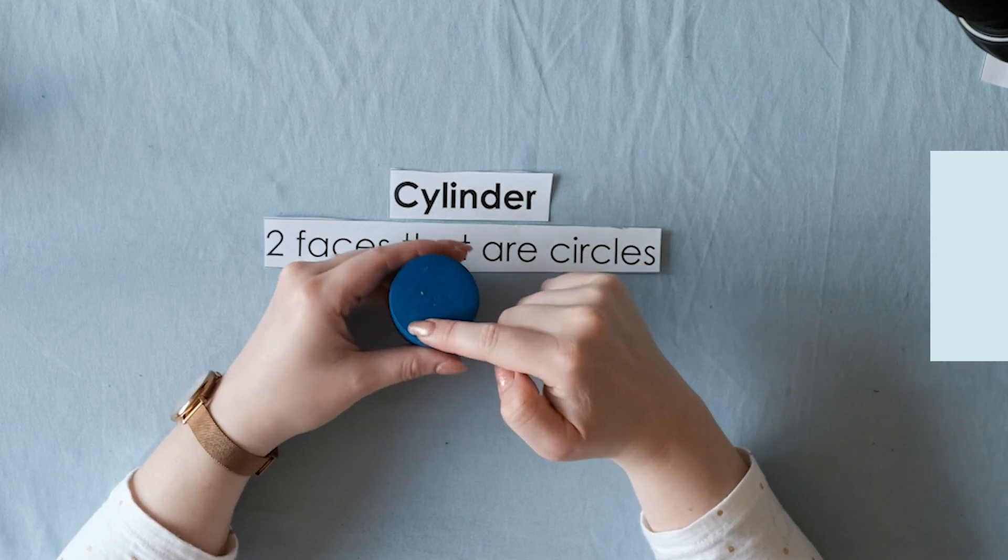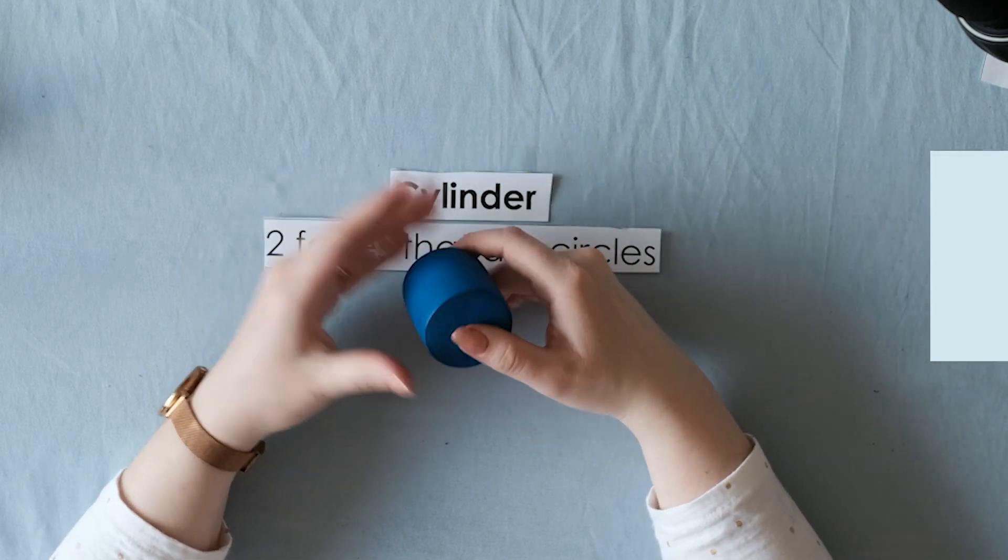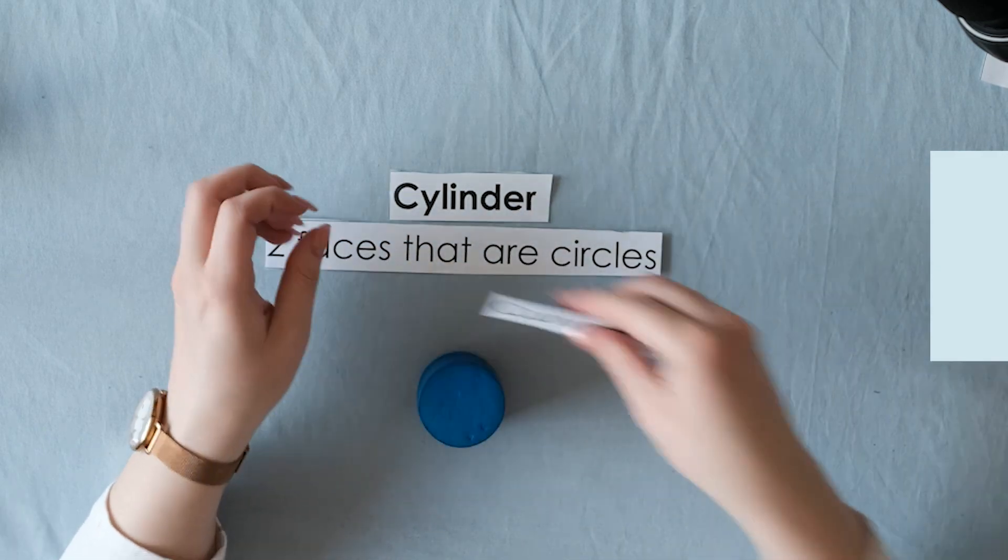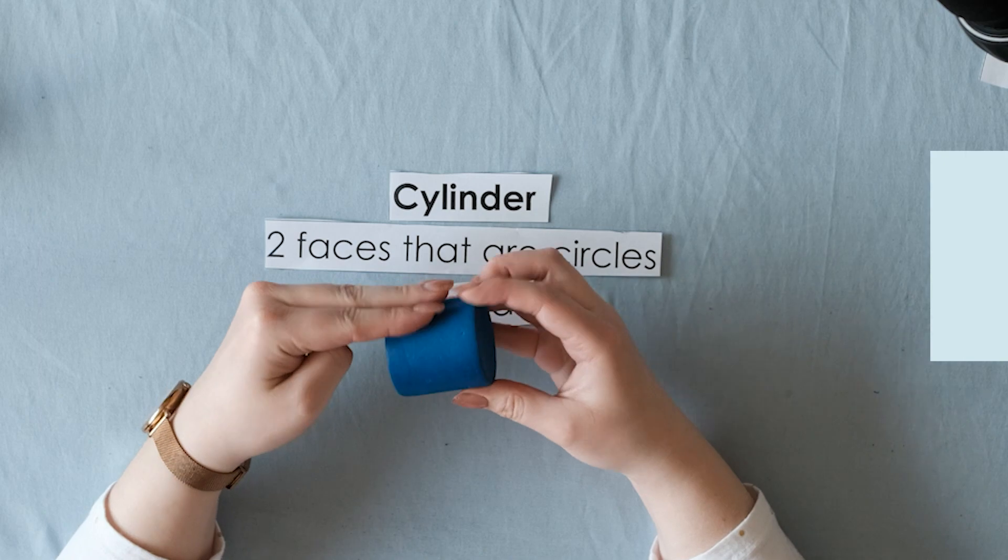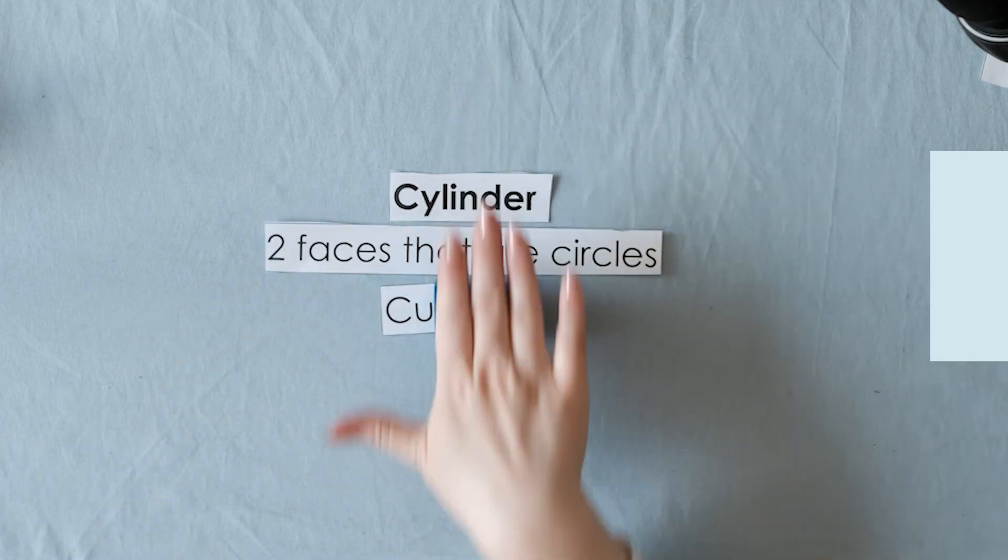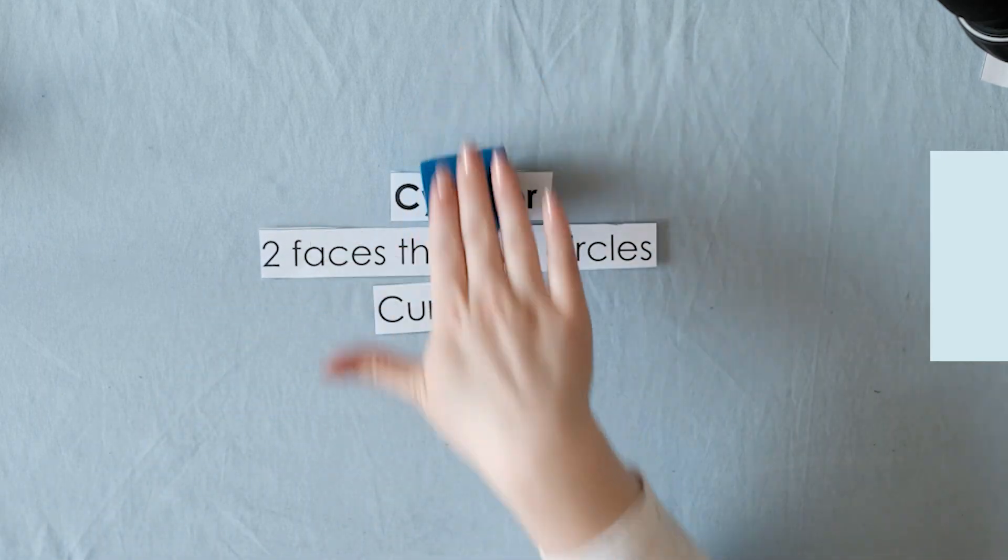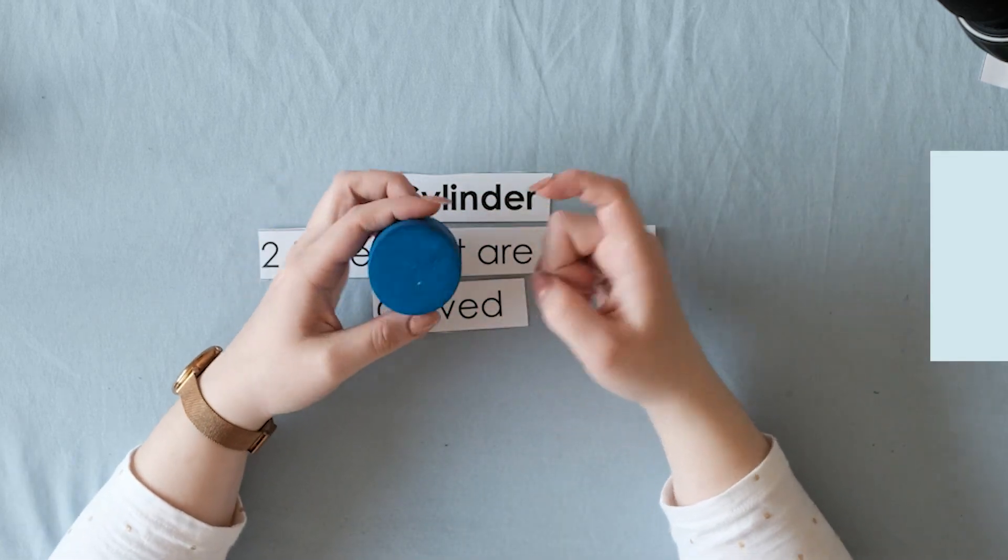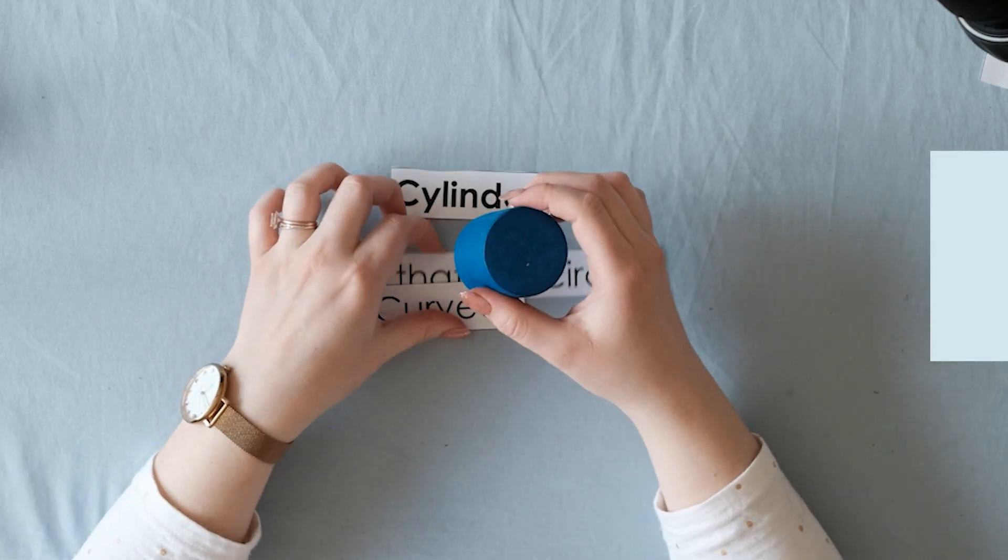If I want to roll it like a rolling pin, it will go like that. Think about what you notice in your house that's in the shape of a cylinder. The first thing I can think of is a can.